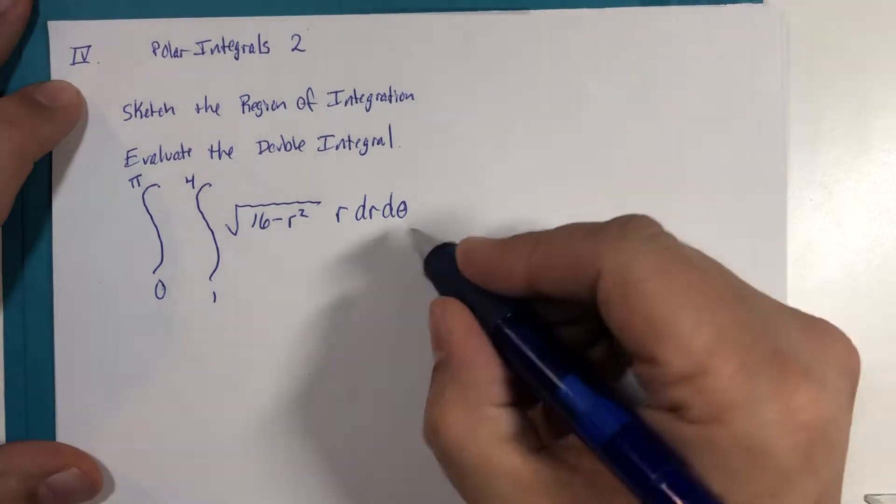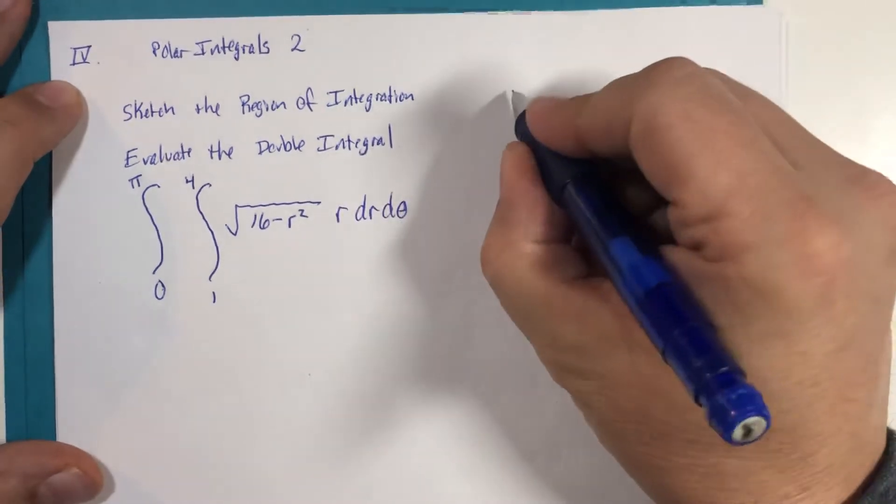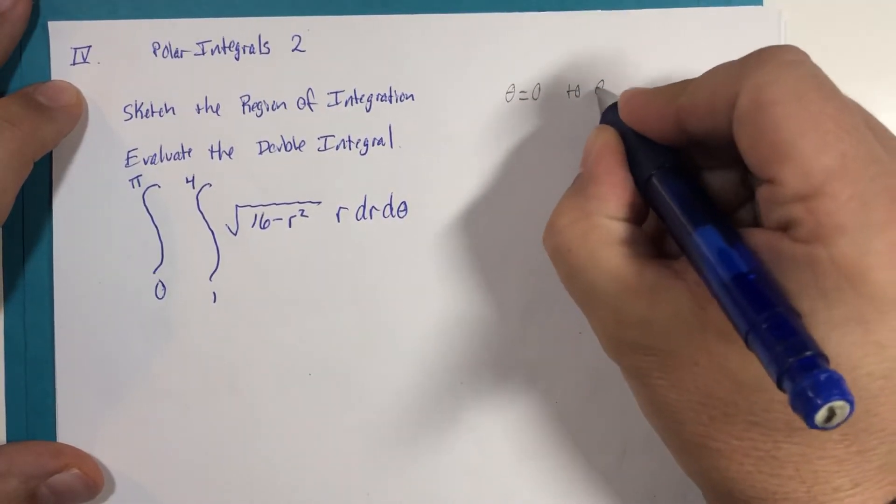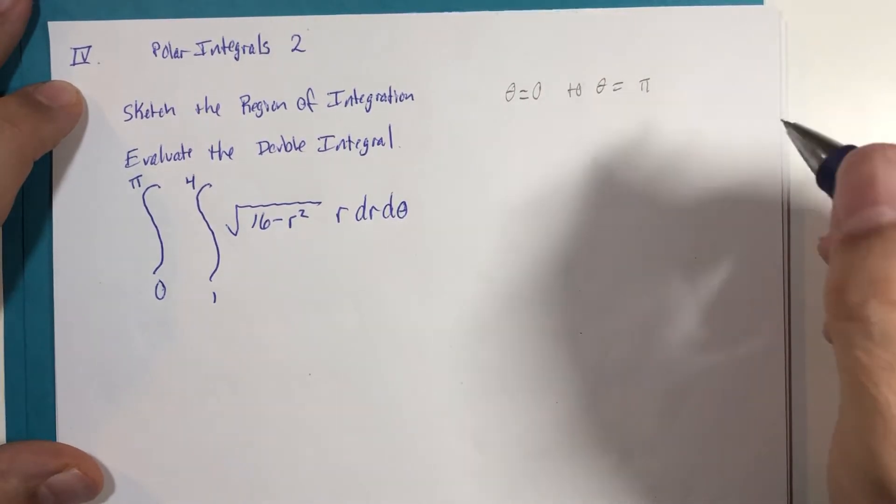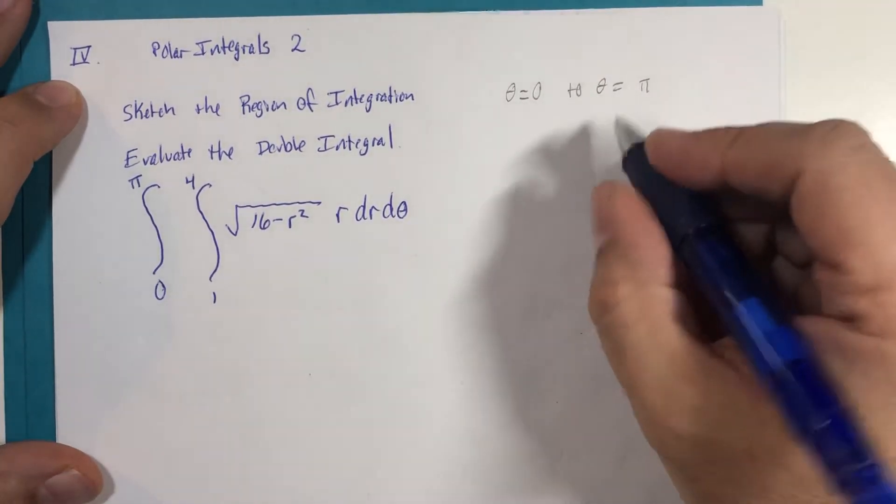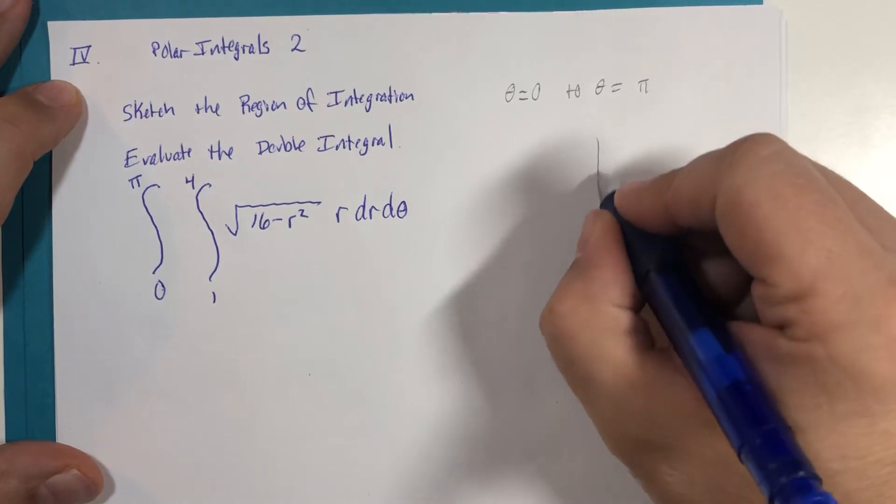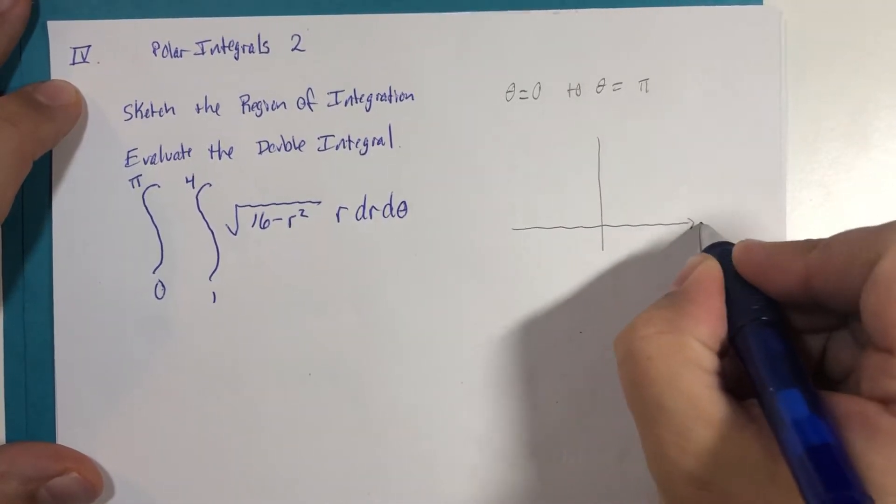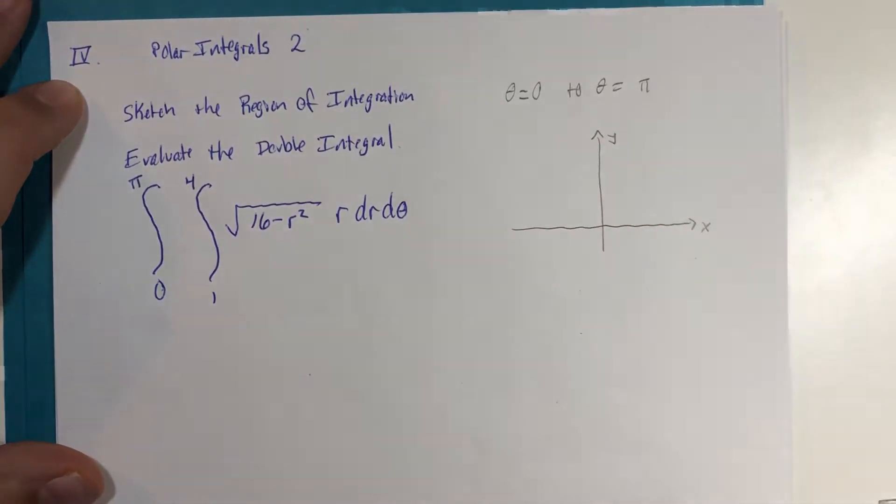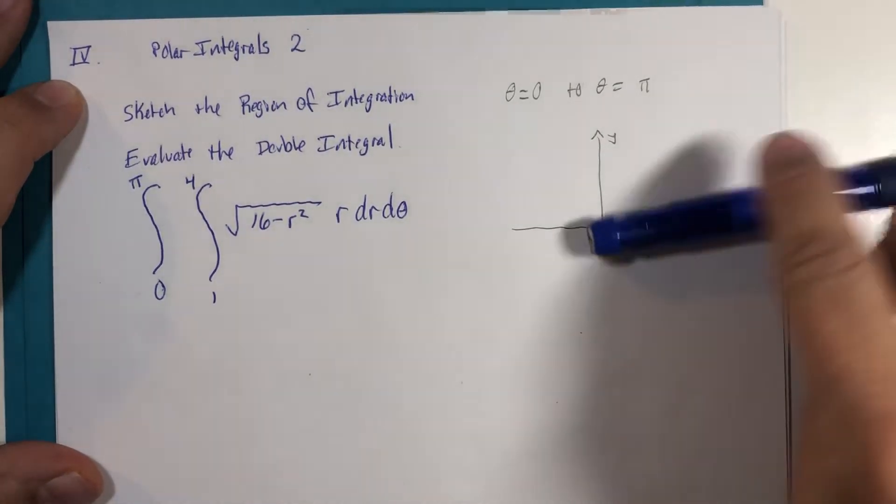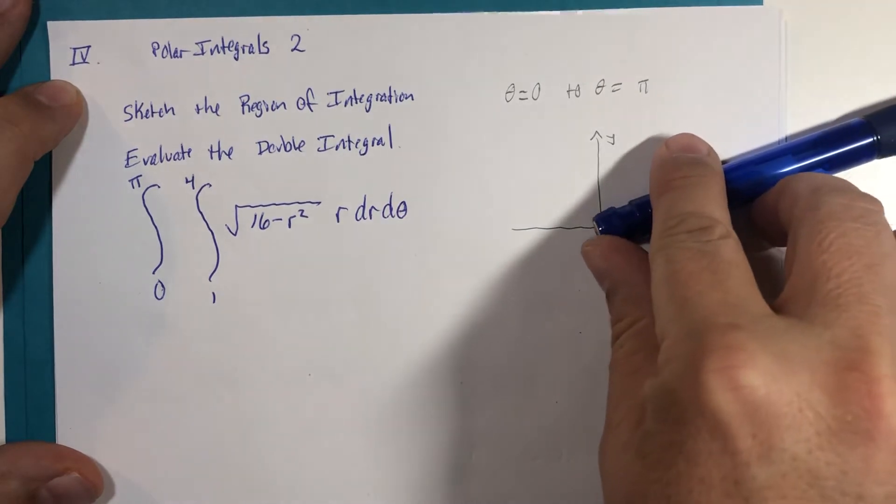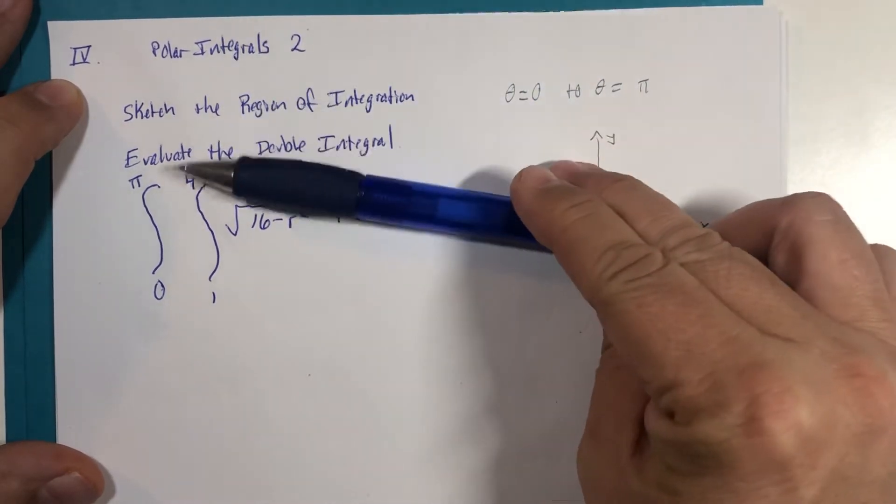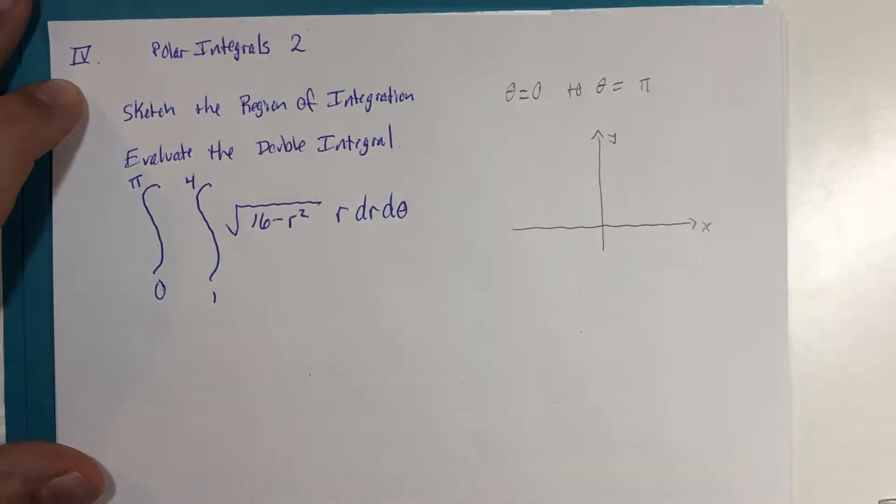Let's get to the region. Theta is from zero to pi, so that means in our graph that we're going to look at, we're going to be looking at this image going from here to here, from zero to pi in our traditional orientation.